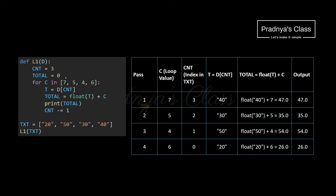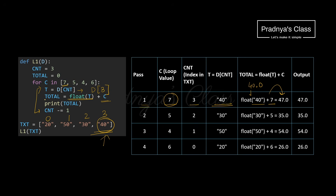In pass one, c is 7. The statement sets t equal to d[c_and_t], where c and t is 3, so we access index 3 of the list which is the string '40'. Using the float function we convert it to 40.0 and add c which is 7. So total becomes 47.0. The first output is 47.0.